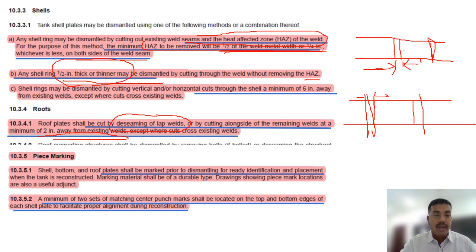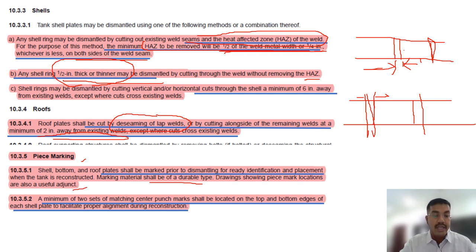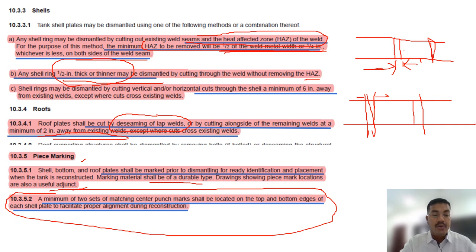Piece marking is important and usually comes in the close-book exam. Shell, bottom, and roof plates will be marked prior to dismantling for ready identification and placement when the tank is reconstructed. Marking materials will be of a durable type. A minimum of two sets of matching center-punch marks shall be located on the top and bottom edge of each shell plate to facilitate proper alignment during reconstruction.